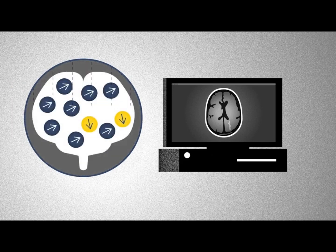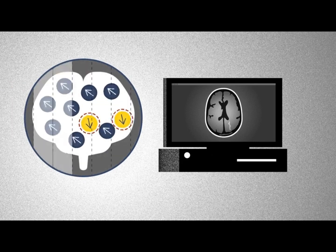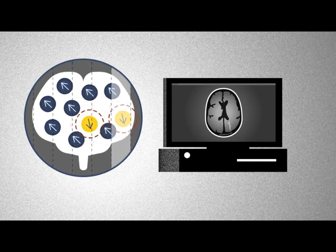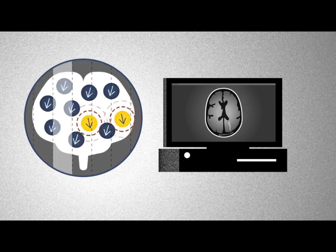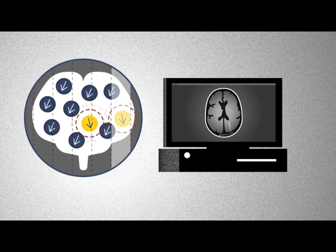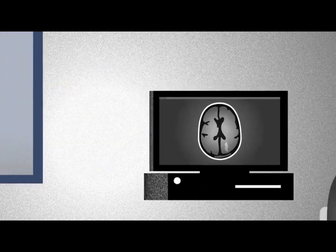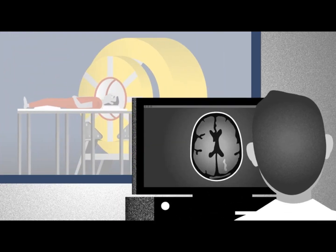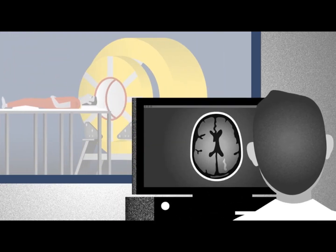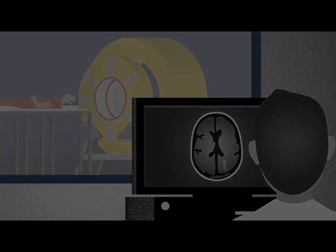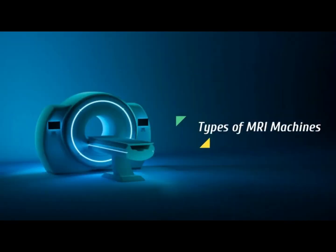By taking images of the body in each section of the magnetic field, the machine produces a final three-dimensional image of the organ which doctors can analyze to make a diagnosis. Let's see the different types of MRI machines.